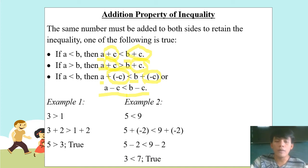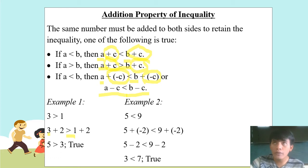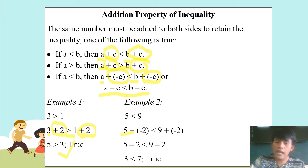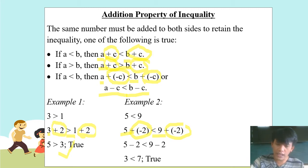Example 1: 3 > 1. When we add positive 2 to the left side, we also add 2 to the right side to keep it balanced. That gives us 5 > 3, which is true. Example 2: 5 < 9. When we add negative 2 to both sides, it is written as 5 − 2 < 9 − 2, which gives us 3 < 7. That is true and correct.